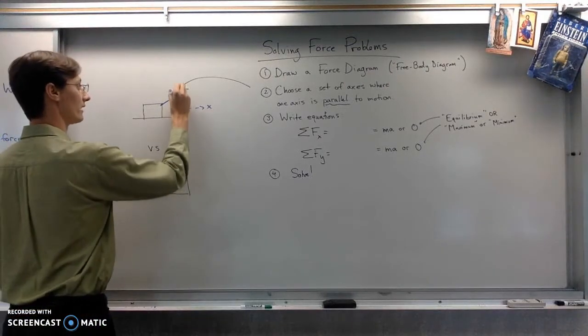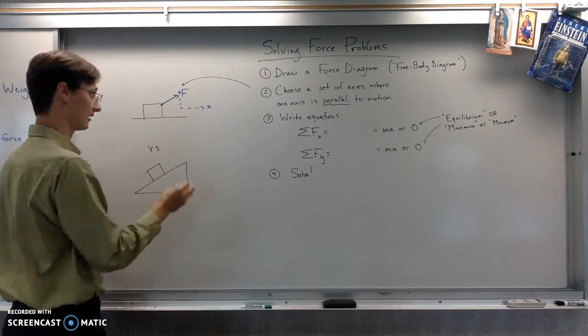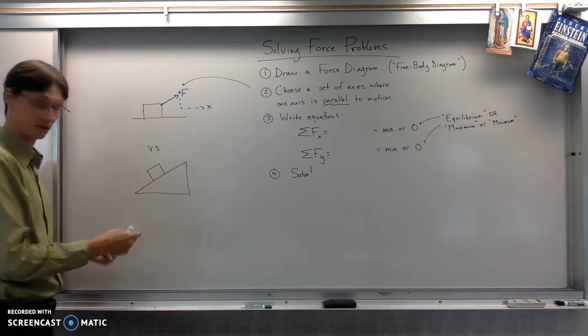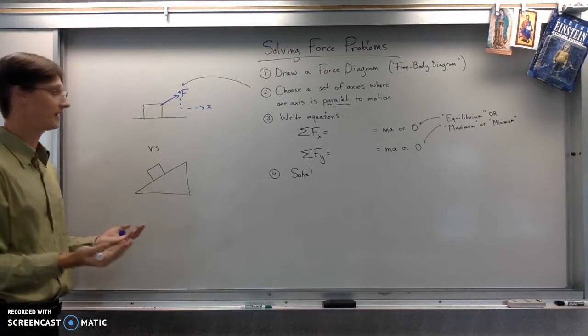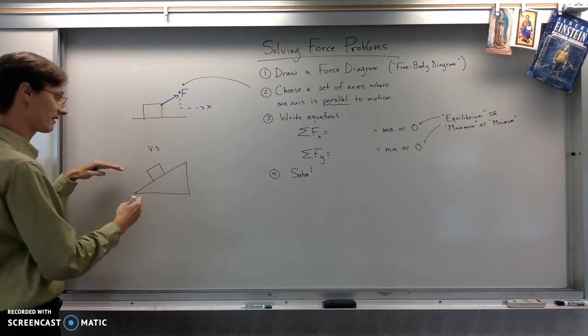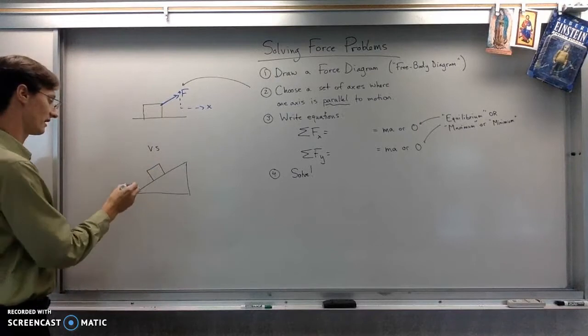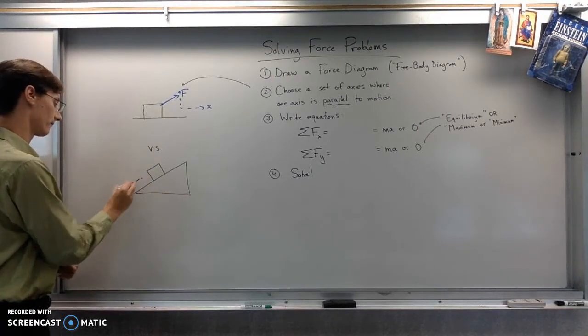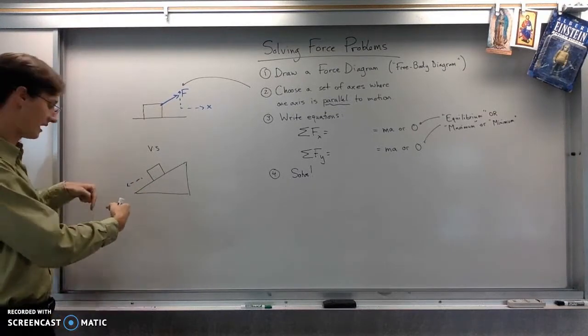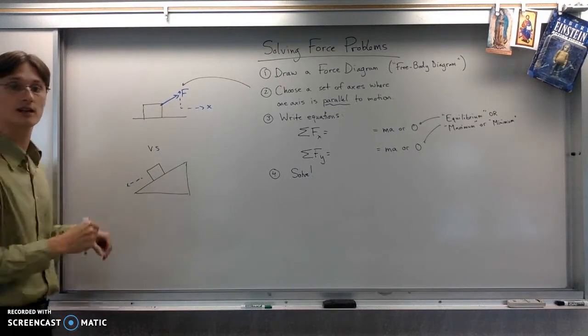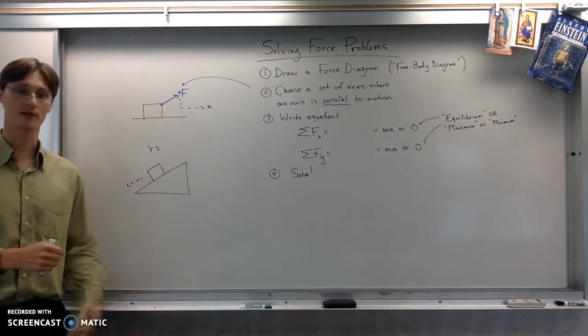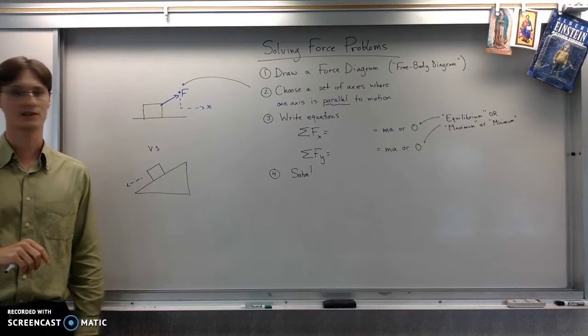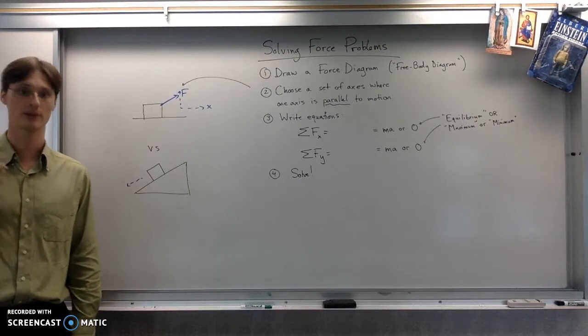And then the vertical axis could be perpendicular to that the other way. For this one, however, we wouldn't pick x and y axes like this. And the reason is because if, in fact, the object moves, we would have both a horizontal and a vertical acceleration. And so we'd have to work out what that horizontal and vertical acceleration are, and that gets a lot more complicated when you have two accelerations.